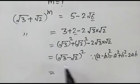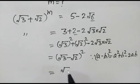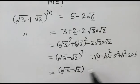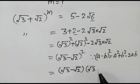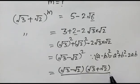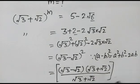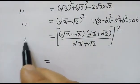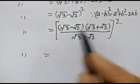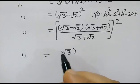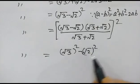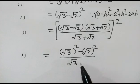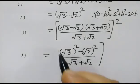Now we will multiply it by its conjugate in the numerator and denominator. Square root of 3 minus square root of 2, multiplied by its conjugate square root of 3 plus square root of 2, over square root of 3 plus square root of 2, whole squared.